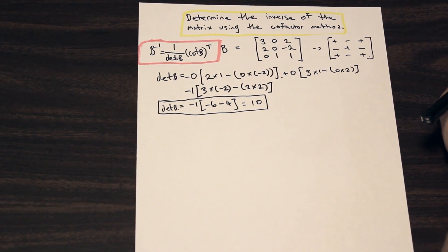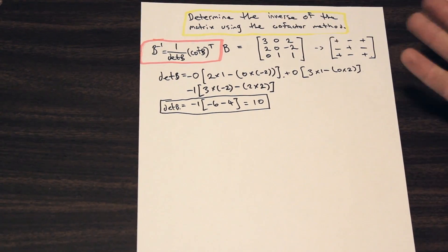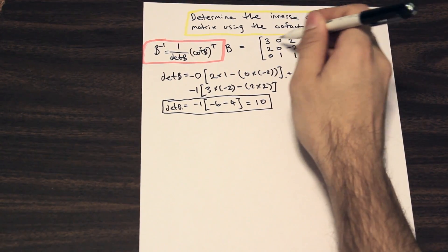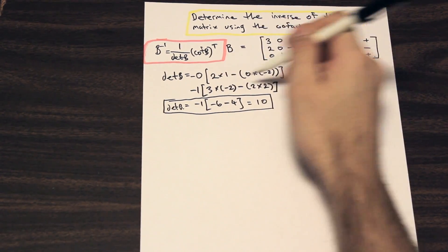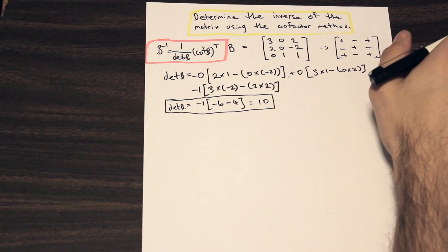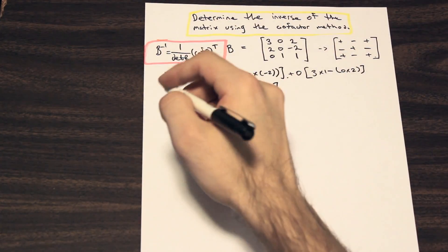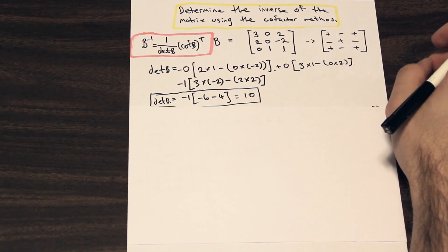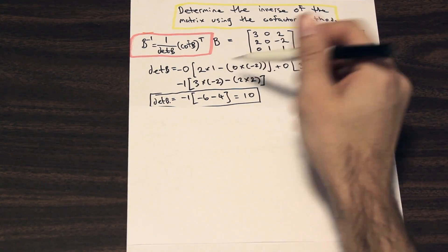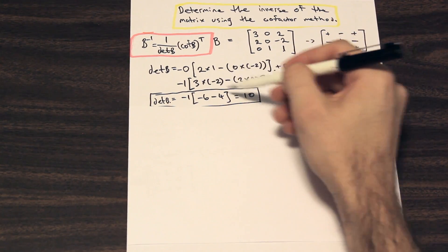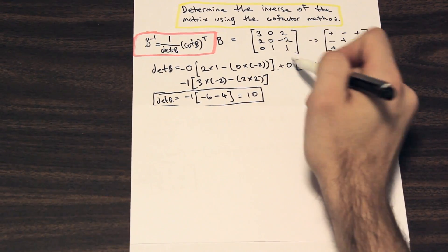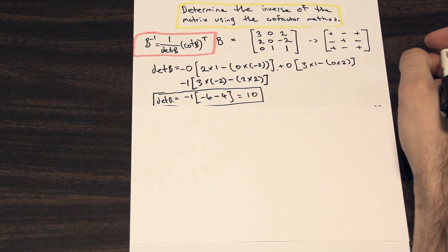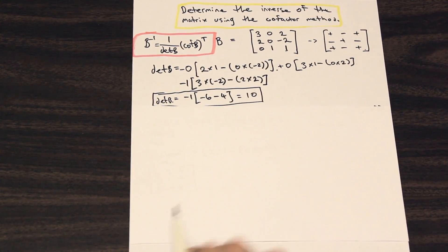Next, we need the cofactor matrix of B. Essentially, we break the matrix up into the matrix of minors — it's the same thing we did for the determinant, except we're not multiplying by the front term. I'll do the first few terms and then you can do the rest, because the video will be too long if I do all nine.